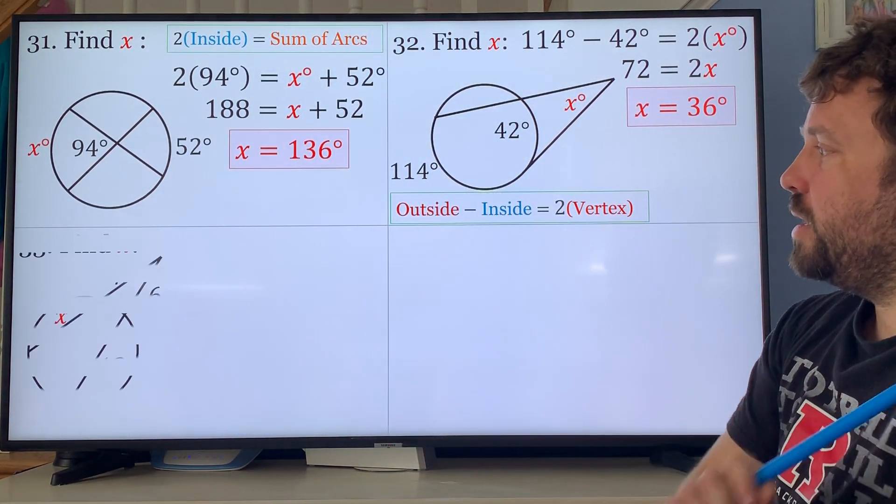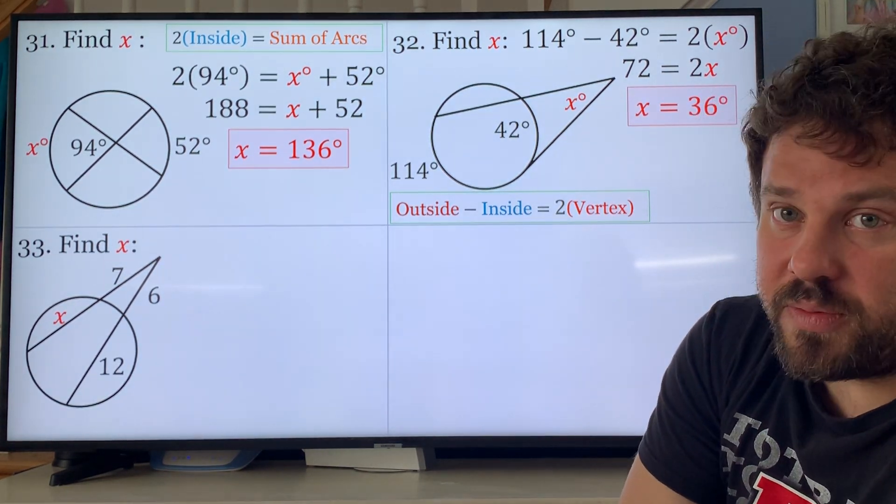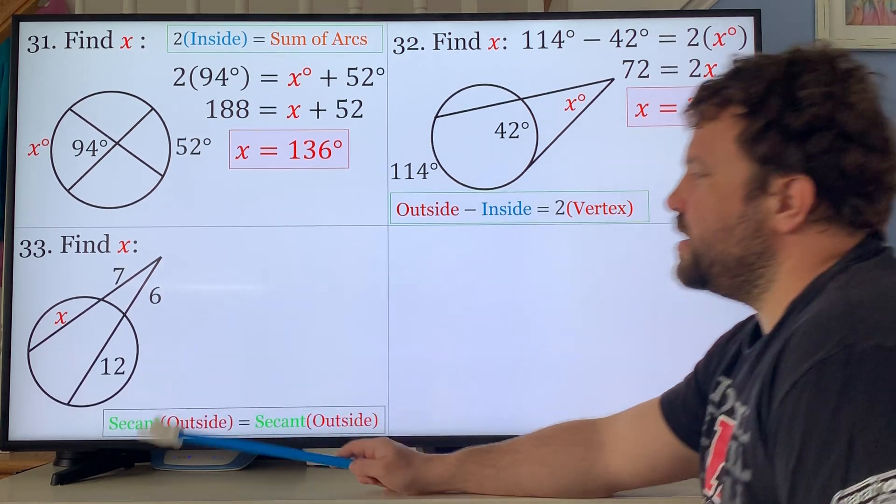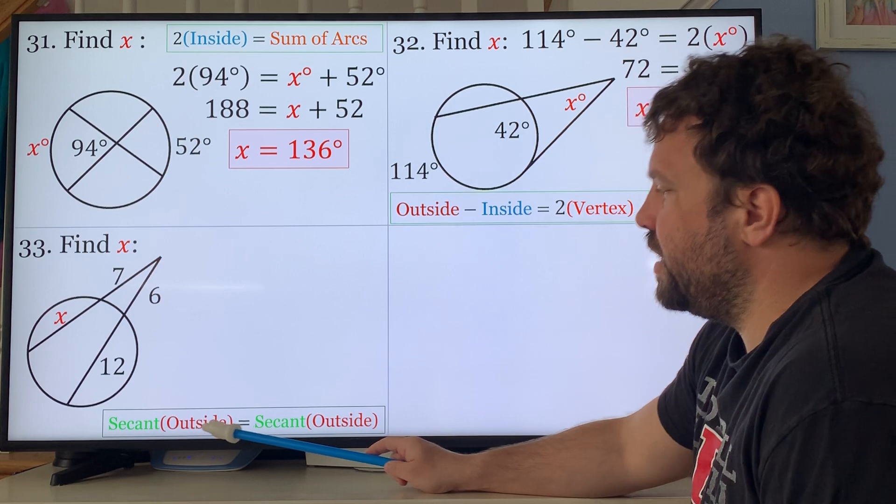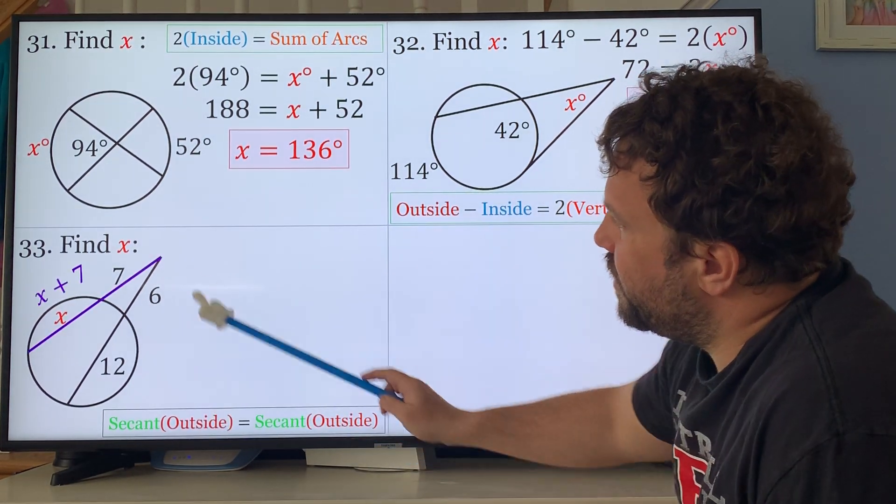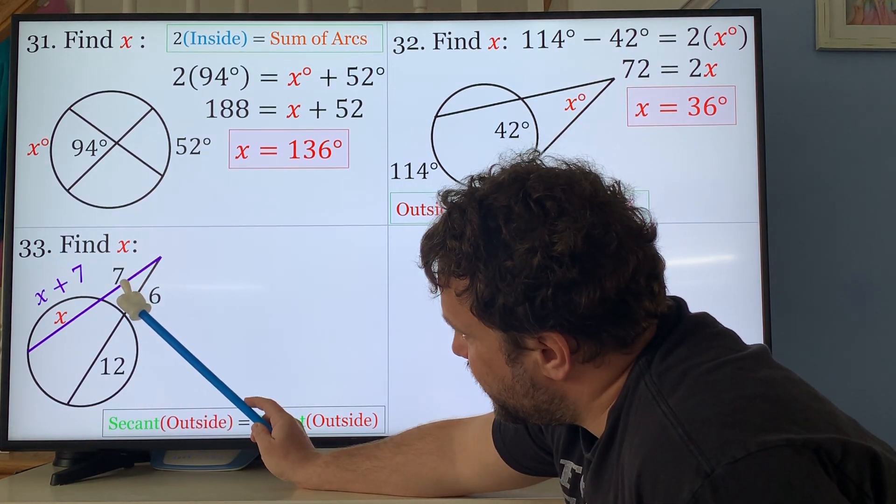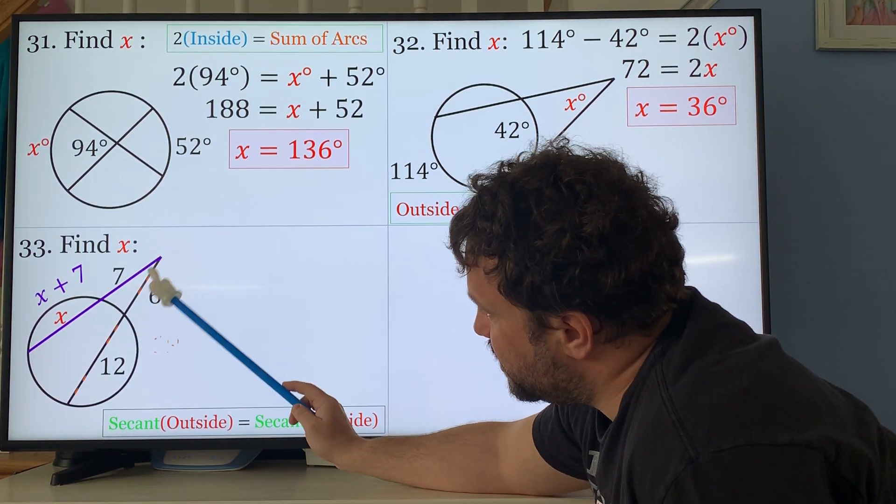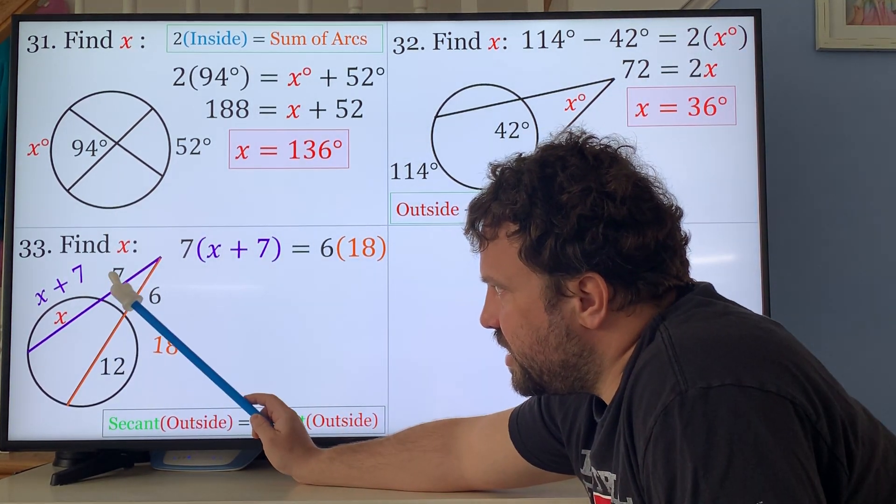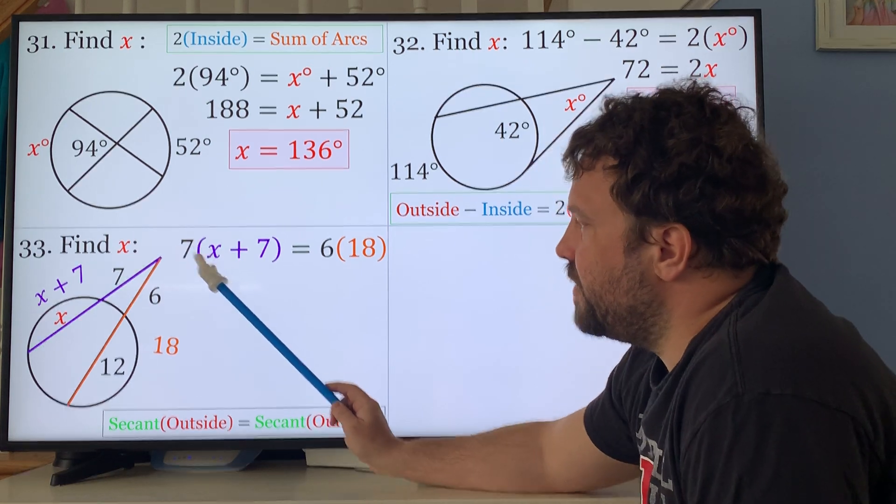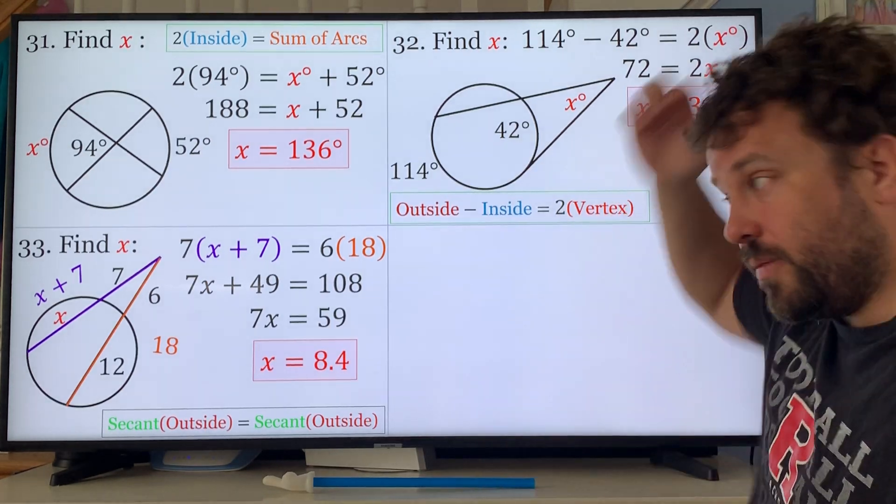Next one, find x. This is the one with the external secant-secant. The way this works is the whole entire secant times the outside portion equals the whole entire secant times the inside. The whole entire secant here is x plus 7, so it's going to be 7 times (x + 7) equals 6 times 18. You're just using the chords on the inside to add to the external. 7x + 49 = 108, 7x is 59, x is 8.4.